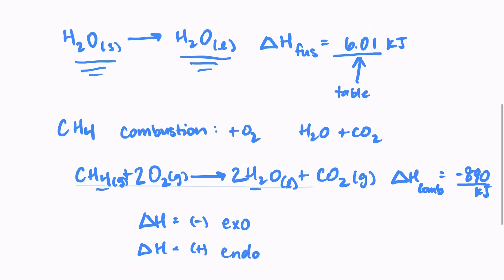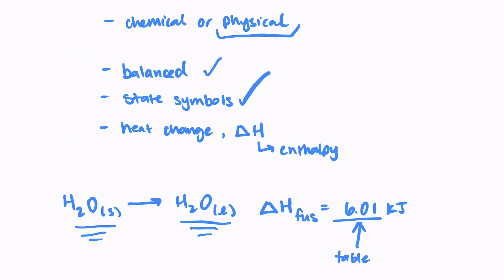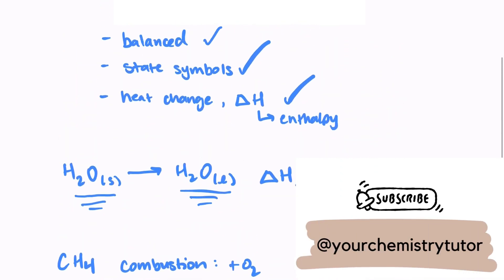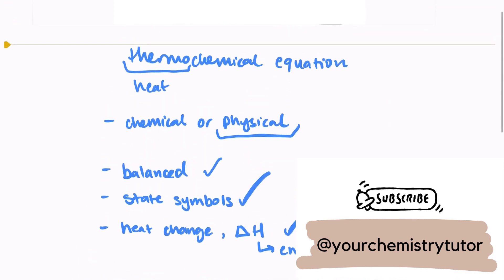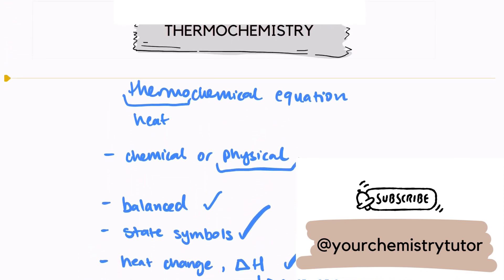So this is how you write a thermochemical equation. You have to balance your equation, show your state symbols, and show the heat change that occurred that you would find in a table. I hope this was helpful. I will post a few more videos about enthalpy. So if you have any other questions, make sure and check my channel. Thank you so much for stopping by.